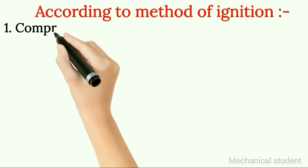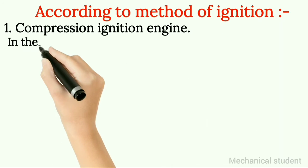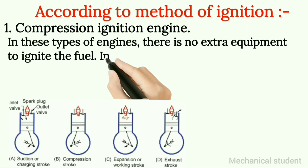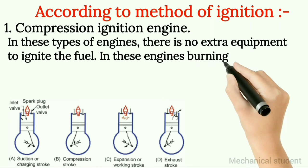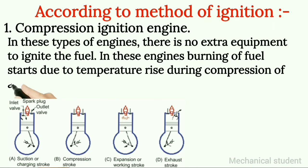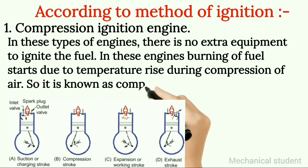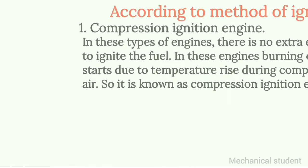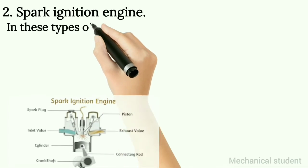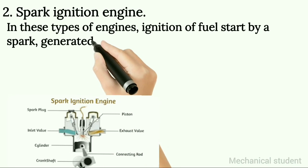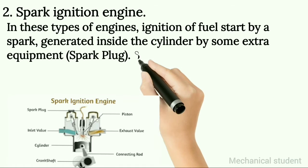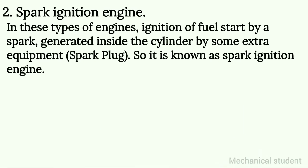According to method of ignition. 1. Compression ignition engine: in these types of engines there is no extra equipment to ignite the fuel. Burning of fuel starts due to temperature rise during compression of air, so it is known as compression ignition engine. 2. Spark ignition engine: ignition of fuel starts by a spark generated inside the cylinder by some extra equipment — a spark plug — so it is known as spark ignition engine.